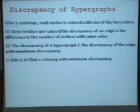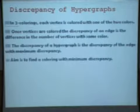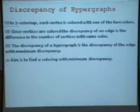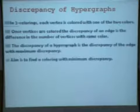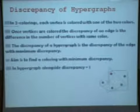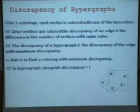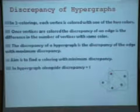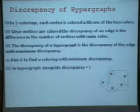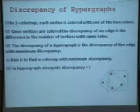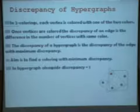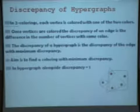The discrepancy of a hypergraph is the discrepancy of the edge with maximum discrepancy, and the aim is to find a coloring with minimum discrepancy. If you have n vertices, the number of colorings is 2 to the power n and the number of hyperedges is O(n³). The problem is hard because heuristics are difficult to define — changing the coloring of one hyperedge affects others unpredictably. Discrepancy problems are notoriously hard, and that is why we selected this for testing our quantum evolutionary algorithm.